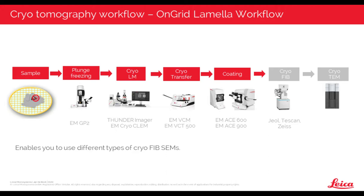Is the 50x objective the only option? What if we need higher magnification? Yes, the 50x objective is the only option because it is our dedicated cryo objective. It already has a numerical aperture of 0.9, and to go higher you would need immersion — which under cryo conditions is quite tricky. There are some non-commercially available systems, but it is difficult to work with immersion. So the 50x objective is our objective of choice, and it's what we use for the control system as well.